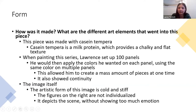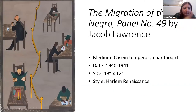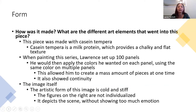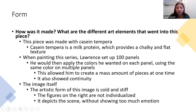He used casein tempera, which is a milk protein, and it helps create a chalky look. He was creating a series of a hundred panels, so he wanted consistency across all of them using the same colors. He actually set up a large number of panels at the same time, going and applying the same color to each one, so the medium allowed him to create continuity.